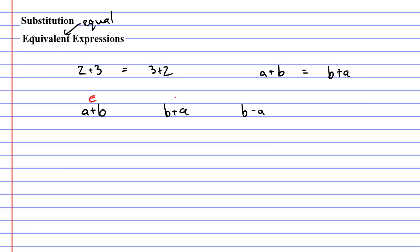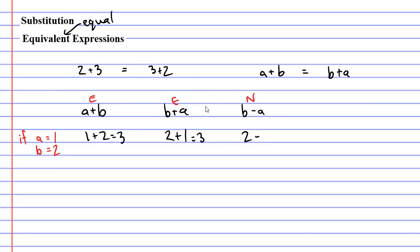We know a plus b and b plus a will be equivalent, and b minus a probably won't be. Let's pick a equals one and b equals two and substitute them in. For a plus b: one plus two equals three. For b plus a: two plus one also equals three. For b minus a: two minus one equals one. The equivalent expressions gave the same solution, but the expression that wasn't equivalent came up with a different solution.